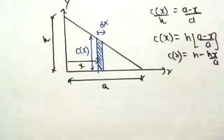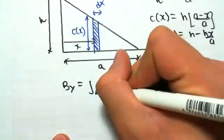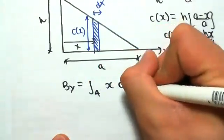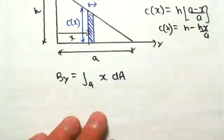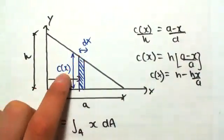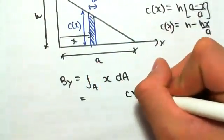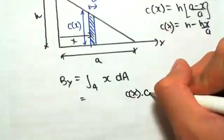Just like before, we're starting with the first moment of area, By equals the integral of x dA. So that's the formula. We now know that dA, this area dA, we can write as c(x) dx. So this is the same as c(x) times dx.